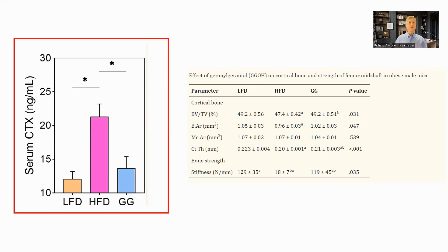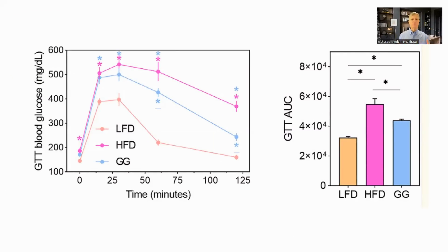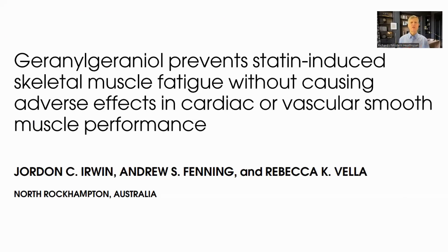CTX is a metabolite in blood serum related to bone breakdown or resorption — a higher level shows higher breakdown. We can see that with GG, this is lower. It also improved the quality of the bone. This table is looking at the femur: CT.TH is cortical thickness, a measure of the structural thickness of the bone, and the bottom row shows bone stiffness, which is also improved significantly. The authors think this was due to reduced inflammation. In the same study, they did a glucose tolerance test, and we can see that the glucose levels in the serum, as well as the area under the curve, were much less for the mice treated with GG. Another study looked at the impact of GG on muscle fatigue in mice being fed statins. GG also helped with muscle performance in the control mice who were not actually taking statins.